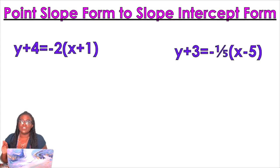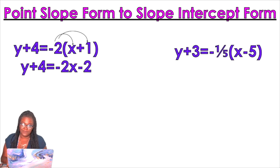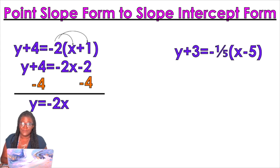So first, we're gonna do point-slope form to slope-intercept form. When you have point-slope form, what you're gonna do first is distribute. So then once you distribute, you are then going to isolate y. So that basically means that we're gonna subtract that 4 from both sides. And we get y equals negative 2x minus 6.